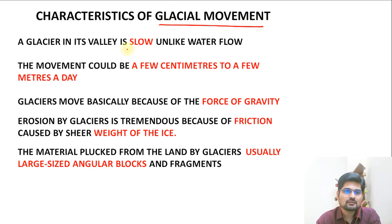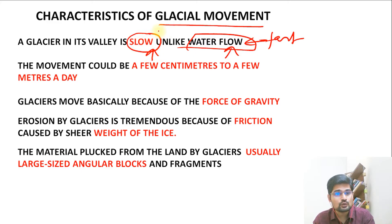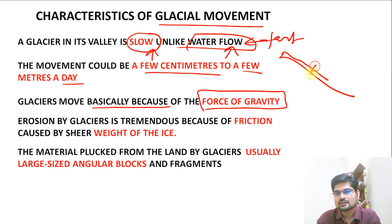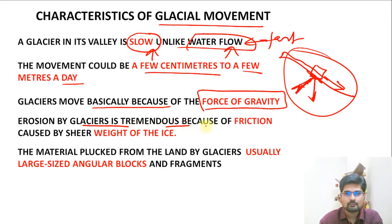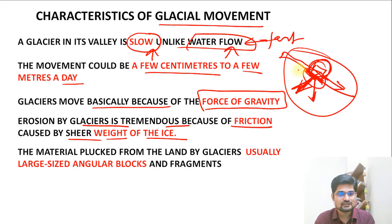Characteristics of glacial movement are important. A glacier in its valley is slow, unlike water flow in fluvial processes. Movement could be a few centimeters to a few meters per day, driven by the force of gravity on the slope, with friction and shear involved. Erosion by glaciers is tremendous because of friction caused by the sheer weight of the ice pressing on the surface.